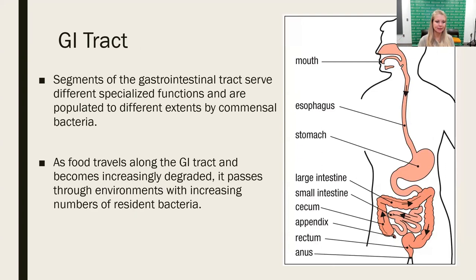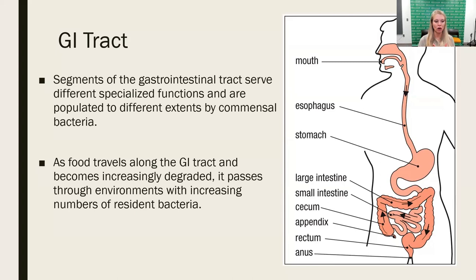Now I want to look at specific sections of the mucosal layers — both anatomically and in terms of immunity. The GI tract starts at the mouth and ends at the anus; it's a tube within a tube. Things come in through the mouth and travel through this long journey, eventually eliminated through the colon and anus. Segments of the GI tract are very different based on location and the job for that particular section.